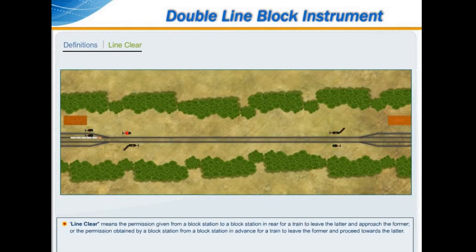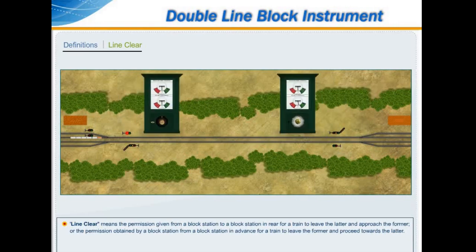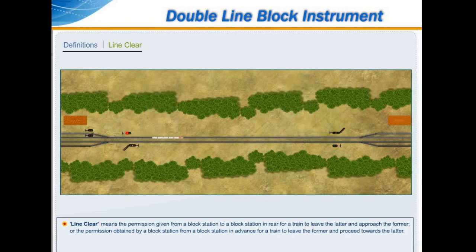Line clear means the permission given from a block station to a block station in rear for a train to leave the latter and approach the former, or the permission obtained by a block station from a block station in advance for a train to leave the former and proceed towards the latter.